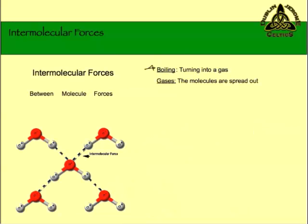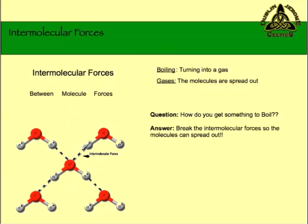Let's talk about what happens when something boils. When you boil it, it turns from a liquid into a gas. Literally what's happening is the molecules are spreading out, getting farther apart, because gas molecules are really far apart. So to spread those molecules out, we need to break the intermolecular force. In order to make it boil, we need to overcome and break the intermolecular forces so the molecules can spread out.